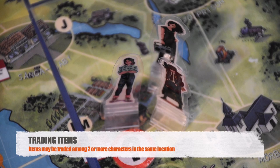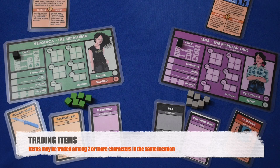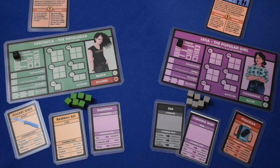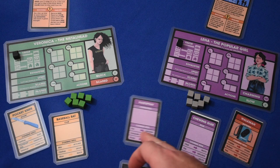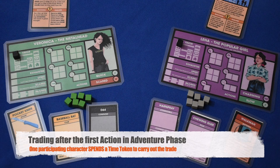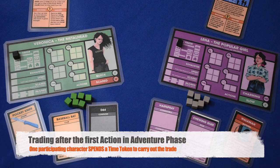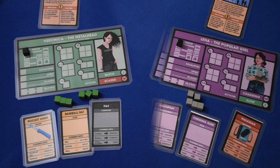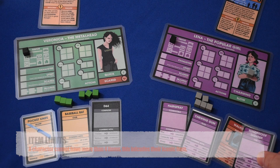At the very beginning of the adventure phase, two or more characters in the same location can trade items freely. Later in the game, if two or more characters want to trade, one of the participants spends one time token — placing it on the character portrait — and then they carry out the trade. Keep in mind: characters can never accumulate more than four items in their possession, including their iconic item.